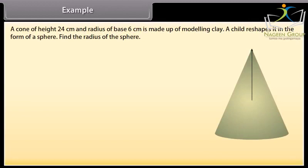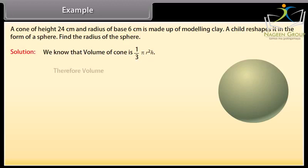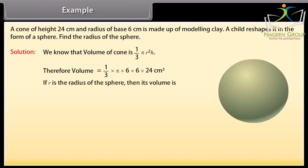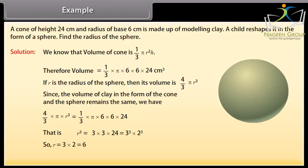Example: A cone of height 24 cm and base radius 6 cm is made of modeling clay. A child reshapes it into the form of a sphere. Find the radius of the sphere. Volume of cone = (1/3)πr²h = (1/3) × π × 6 × 6 × 24 cm³. Since the volume of clay is preserved, volume of cone equals volume of sphere (4/3)πr³. Solving, r = 3 × 2 = 6, therefore the radius of the sphere is 6 cm.